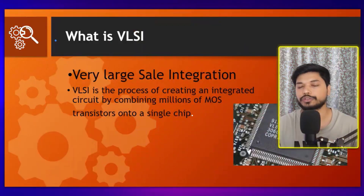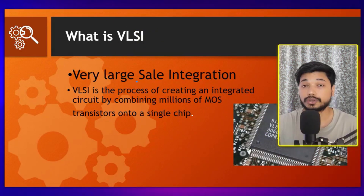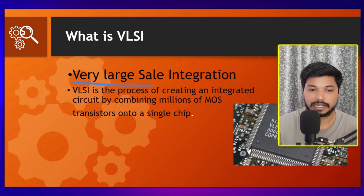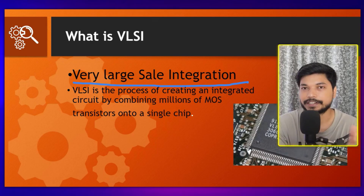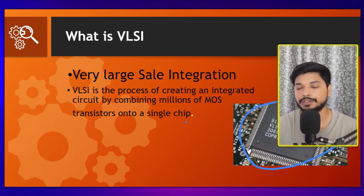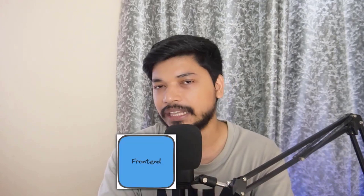So first, what is VLSI? VLSI stands for Very Large Scale Integration. It is basically a combination of CMOS or integrated circuits. As you can see in the photograph, this is a VLSI chip — the black chip you've seen on a RAM stick is called a VLSI chip. In VLSI we have two domains: the front-end domain and the back-end domain.